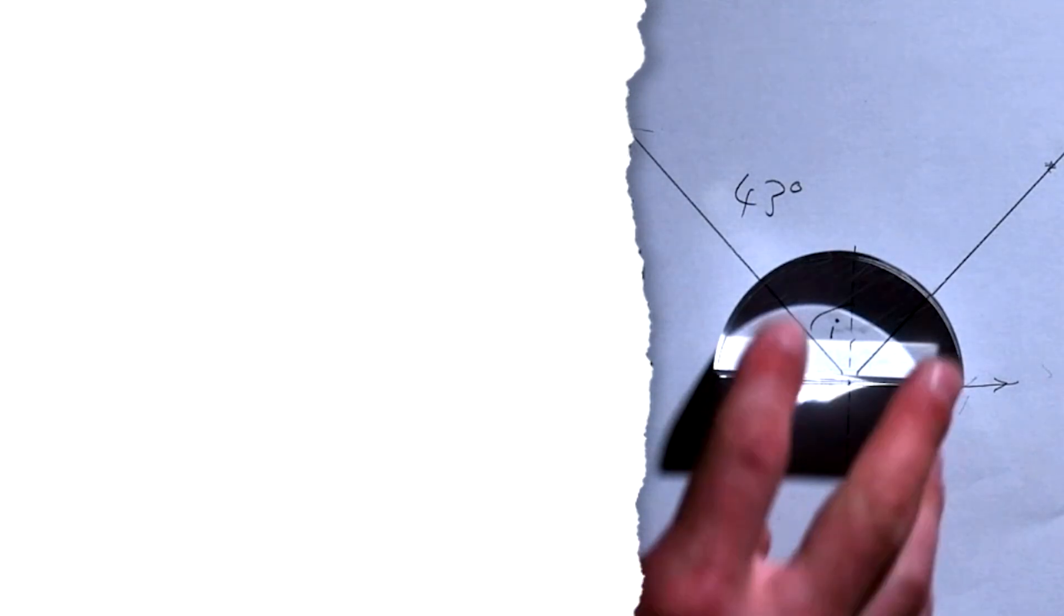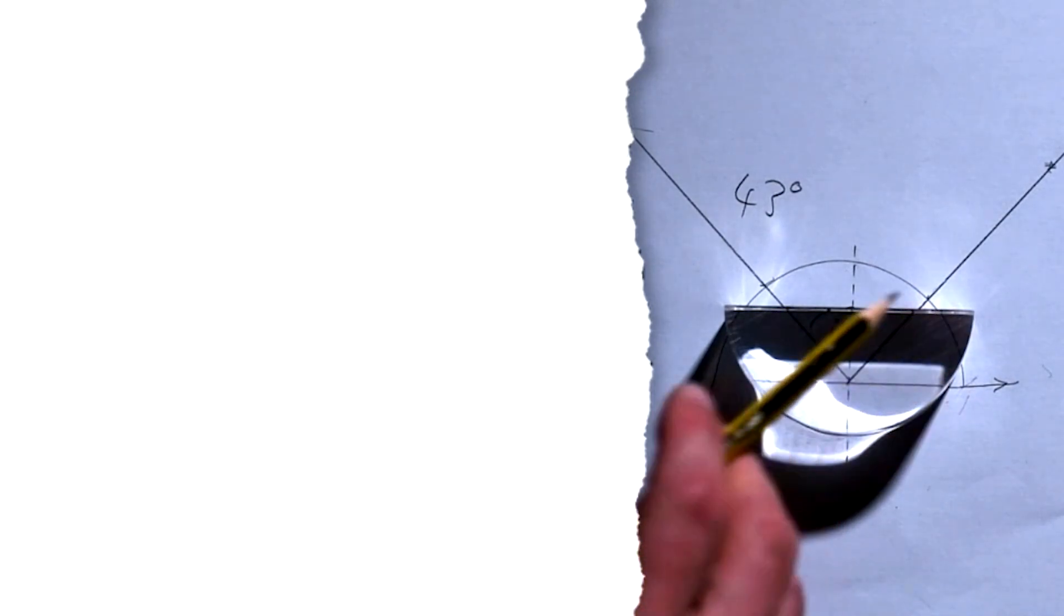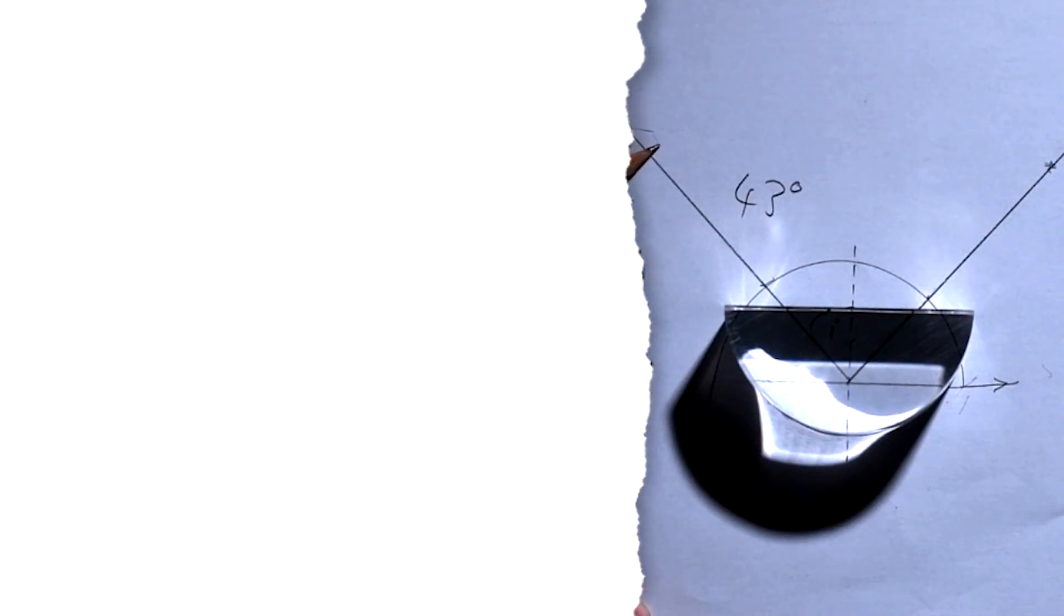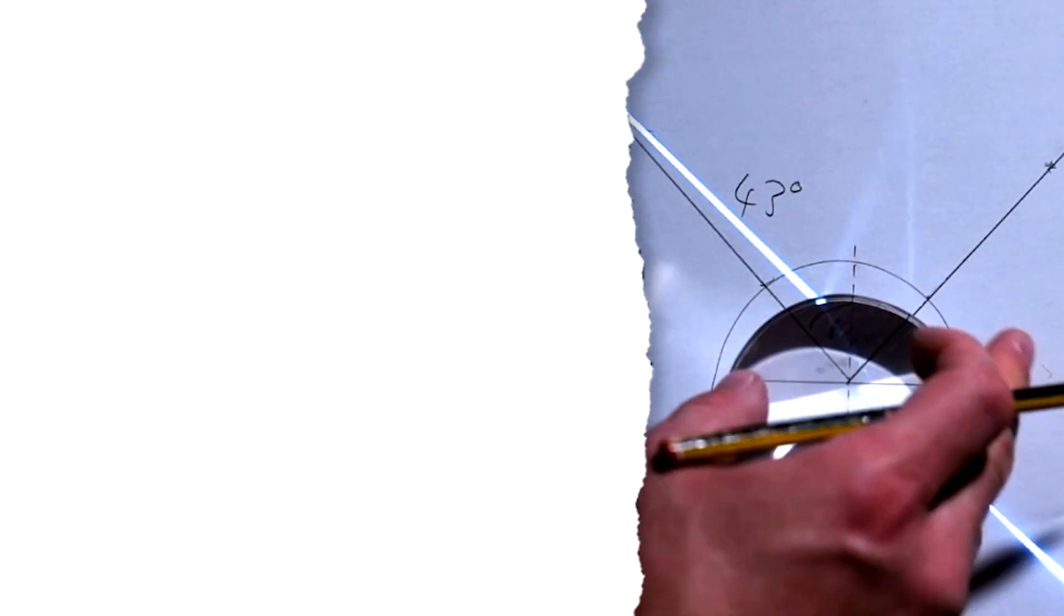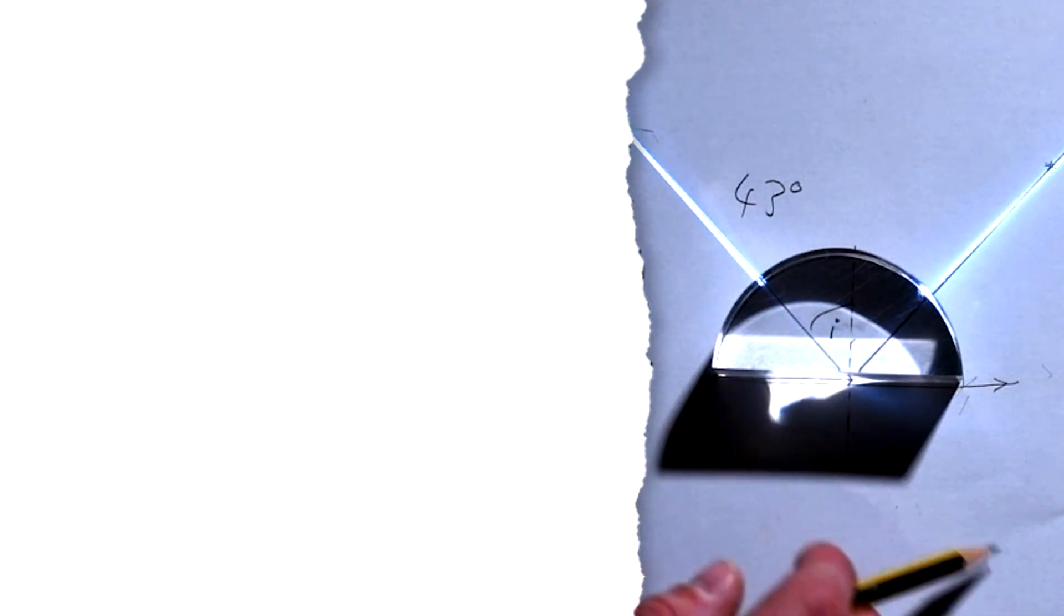Do you remember that when I had my semicircular block around that way, we didn't actually get TIR. Light was still being refracted out. That's because we were looking at the light ray coming from air going into the glass. When we turn it around, we're looking at the light ray that's in the glass coming out into the air. That was the only time that we had TIR happen.